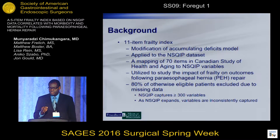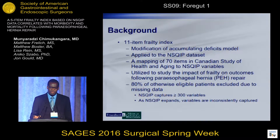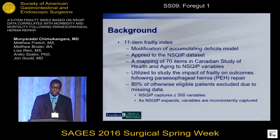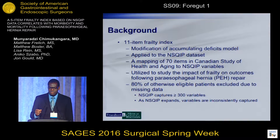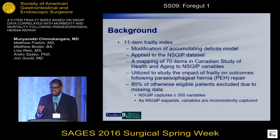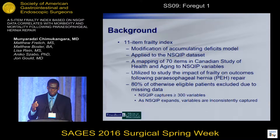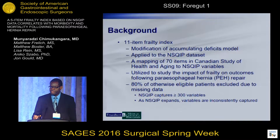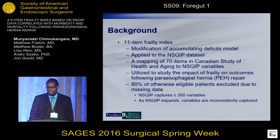Researchers have utilized this to study surgical problems, and we recently utilized it to study frailty as it relates to paraesophageal hernia outcomes. However, what we noted looking at the most recent NSQIP data file was that the majority of patients were missing variables. Partly this has to do with the NSQIP program changing year after year, where they now capture over 300 variables, making it impractical to consistently capture all variables per patient.